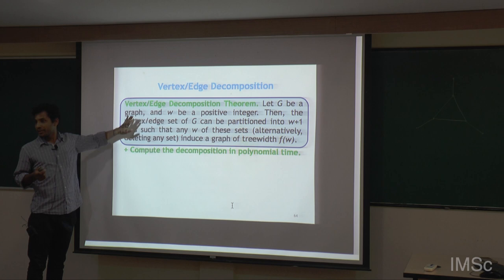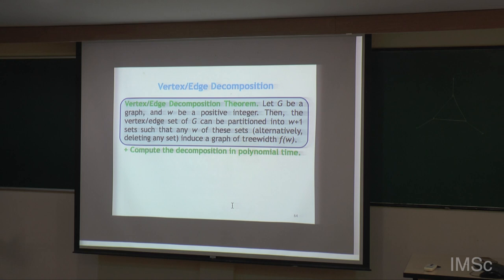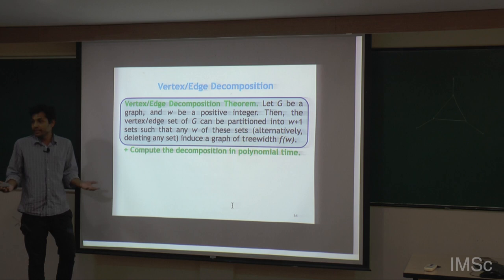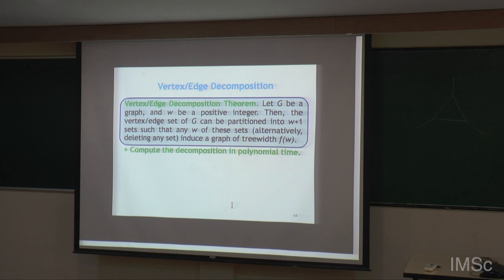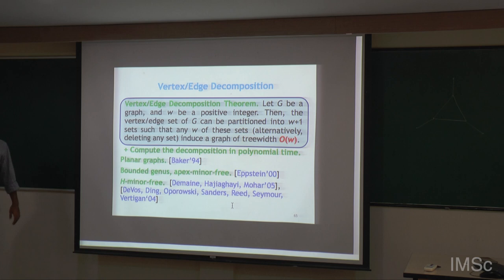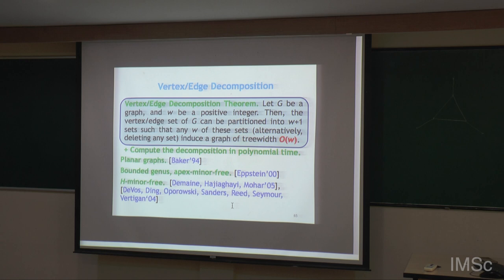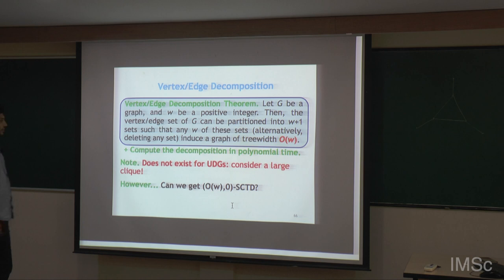Do all graphs have this kind of decomposition theorem? No — general graphs do not. Take an N-vertex clique: you cannot partition it such that deleting any part bounds the tree width. But it is possible for other graph classes, for example planar graphs — that is Baker's technique — and this can be extended to other graph classes as well.